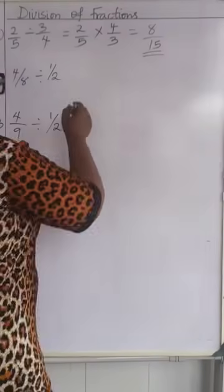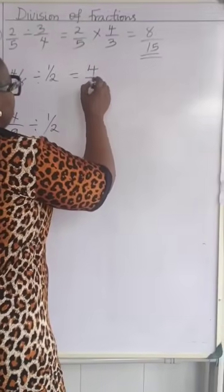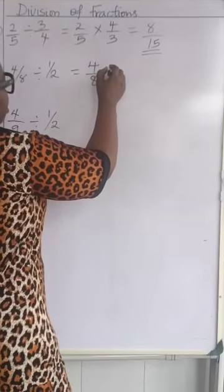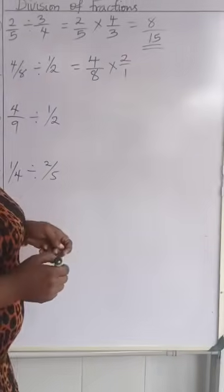Now let's look at number 2. We have 4 over 8. We still have a reverse here, multiplying by 2 over 1. We can't cancel out, right?